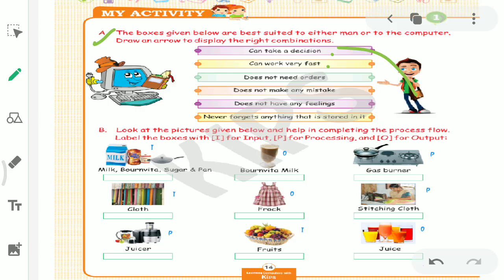Second one: can work very fast? Computer. We will match it with computer. Third one: does not need orders. Computers need orders, so man doesn't need orders. We will match it with man. Fourth: does not make any mistakes. Computer does not make any mistakes. We will match it with computer.